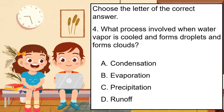What process is involved when water vapor is cooled and forms droplets and forms clouds? A. Condensation. B. Evaporation. C. Precipitation. D. Runoff. The correct answer is A.